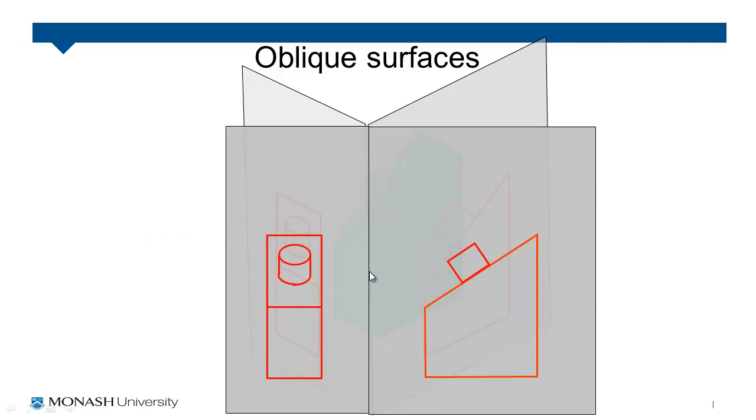Now the question is how do we know that this is a circle? We know from our original object that it is a circle but without taking a couple of measurements off our drawing there is no way to quickly look at that and know that it's a circle and what we've got protruding from this surface is a cylinder.